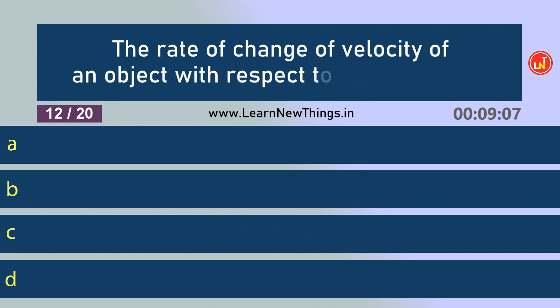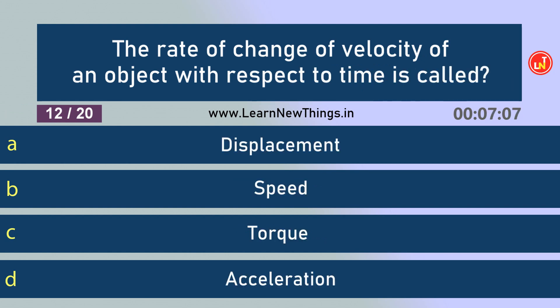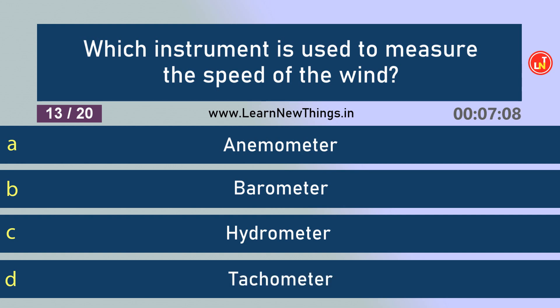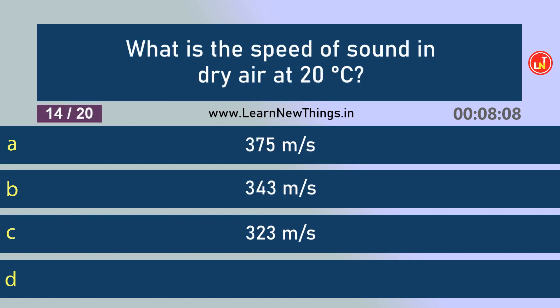The rate of change of velocity of an object with respect to time is called acceleration. Which instrument is used to measure the speed of the wind? Anemometer. What is the speed of sound in dry air at 20 degree Celsius?